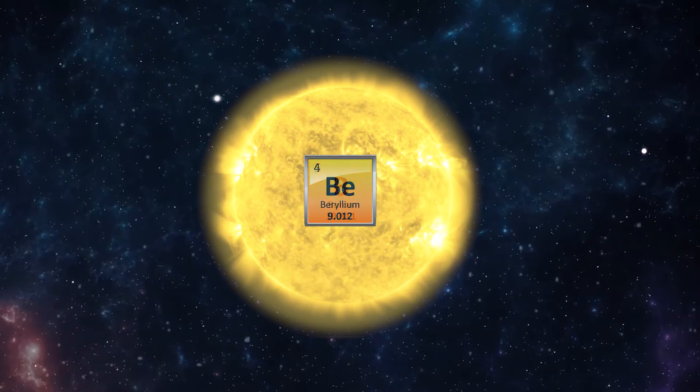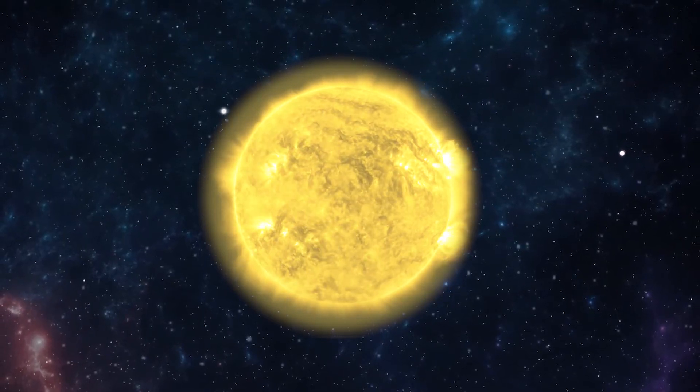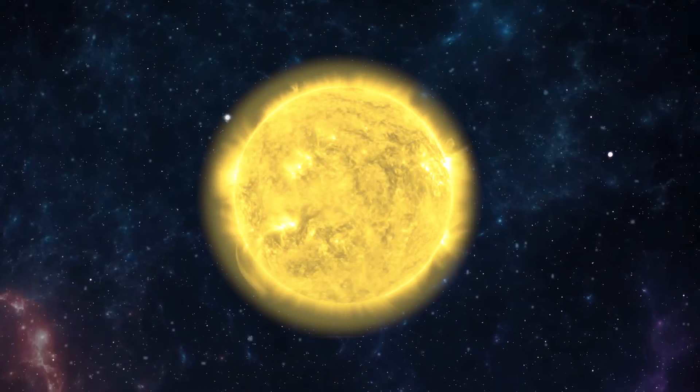Our sun can produce lithium, beryllium, and boron by fusing helium. But our sun is a yellow dwarf and isn't big enough to forge the rest of the elements.